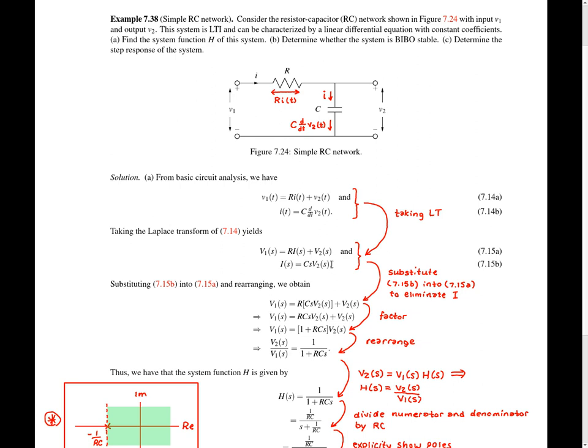We observe that the system function big H that we're seeking is given by the Laplace transform of the output of the system divided by the Laplace transform of the input of the system — in other words, big V2 divided by big V1. Therefore, we want to use equations 7.15a and 7.15b in order to find an expression for big V2 divided by big V1.